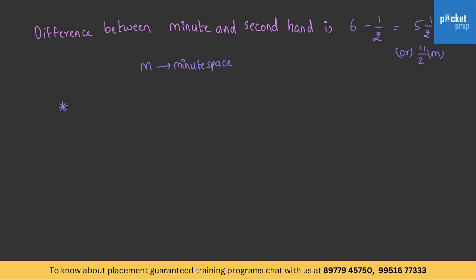The minute spaces are the 60 equal parts in a clock. To know the functioning of a clock, we need to remember this table with basis of 1 hour, 12 hours, and 24 hours. The first property is coincide — when the minute hand and hour hand coincide: 1 time in an hour, 11 times in 12 hours, and 22 times in 24 hours.